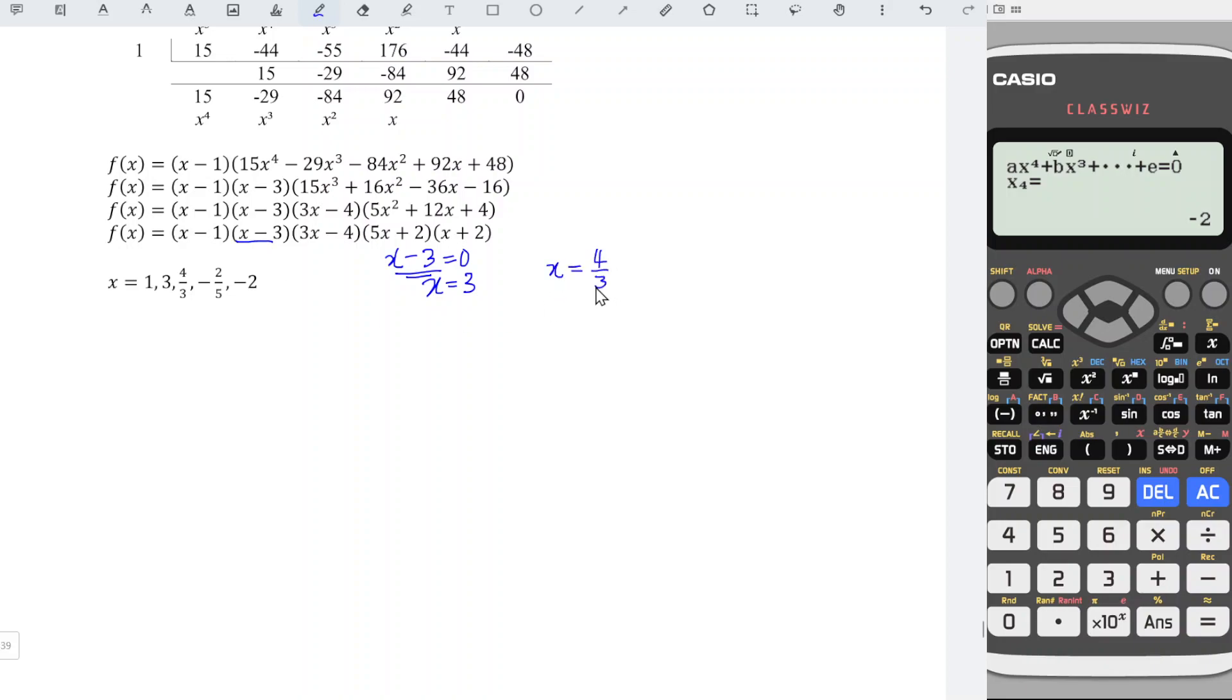Also move to the left, move forward, minus 4 over 3, and we have equal to zero. So this is another factor here. Once we already obtained all the factors, we just have to multiply the last two factors and we should obtain a quadratic function.